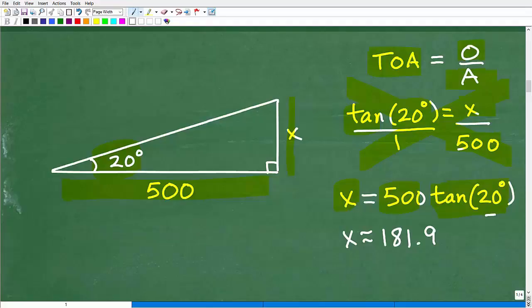Make sure your calculator is in degree mode. And when you do that, you'll get X is approximately equal to 181.9. Okay? So that's what X is equal to.